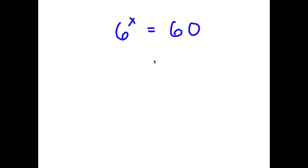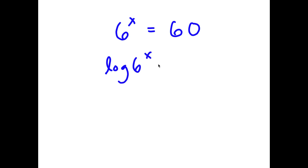So in this problem, I have 6 to the power of x is equal to 60. I'm going to first start by taking the log on both sides. So I have log 6 to the power of x is equal to log 60.